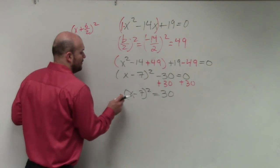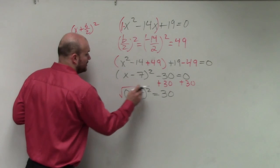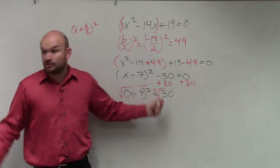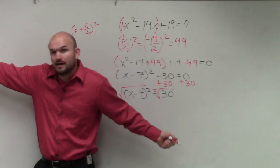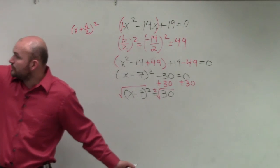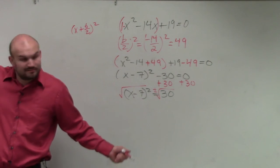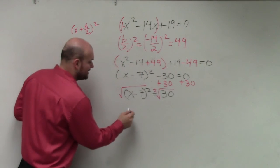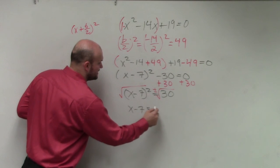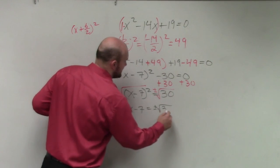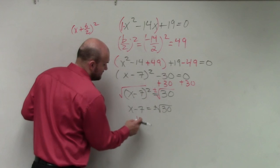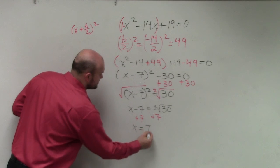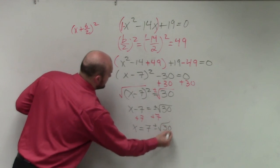Now I need to undo squaring. So to undo squaring, I do square root. Remember, whenever you introduce the square root, though, you have to include the plus or minus. Is 30 a square number? No. So I can't take the square root of 30. I want to see, is there any square numbers that evenly divide into 30? And unfortunately, no. So I'm just going to leave it as plus or minus the square root of 30. You cannot simplify it to any kind of irrational numbers. Just leave it as the square root of 30. Then I'll add 7 to both sides. And my solutions are going to be x equals 7 plus or minus the square root of 30.